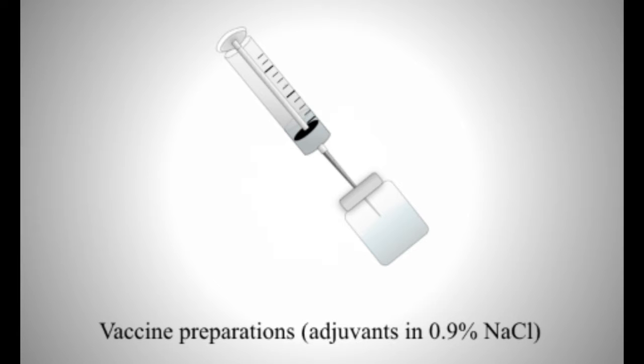What I'd like to show you in these upcoming figures is what happens when you formulate the adjuvants in 0.9% sodium chloride, so physiological saline, and this is typical of what would actually happen when commercial vaccines are prepared. I should also state that the model I'm using contains 0.25 milligram per mil of aluminium, which is typically at the lower range that's accepted within commercial vaccines.